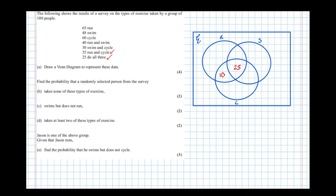Next, 30 swim and cycle. So the swim-cycle overlap region needs to add up to 30, which tells me that this area has to be 5 to make that add up to 30. Then 40 run and swim, so this overlap area has to add up to 40, meaning this one must be 15.